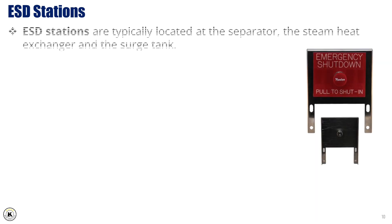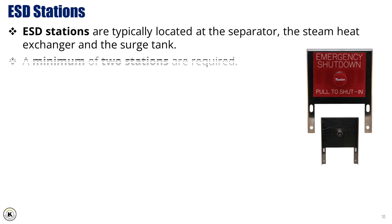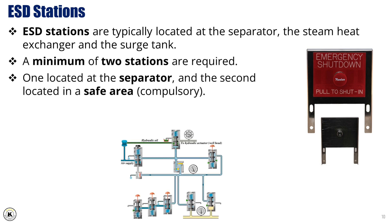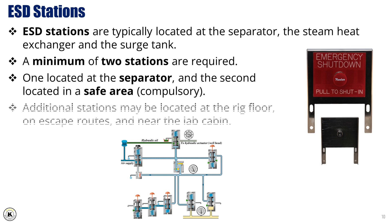ESD stations are typically located at the separator, the steam heat exchanger, and the surge tank. A minimum of two stations are required: one located at the separator, and the second one located in a safe area. Additional stations may be located at the rig floor, on escape routes, and near the lab cabin.